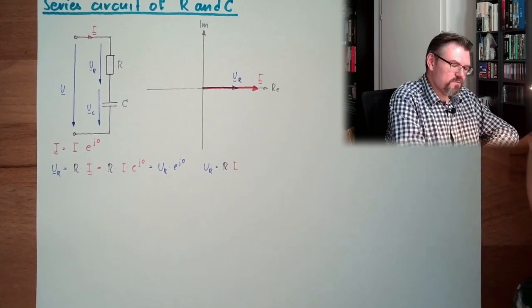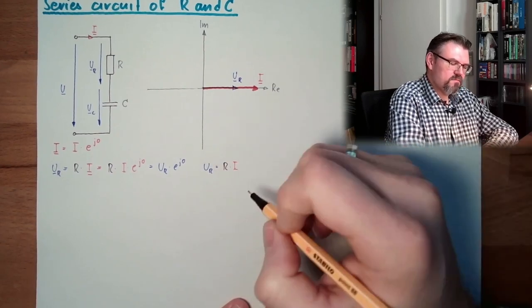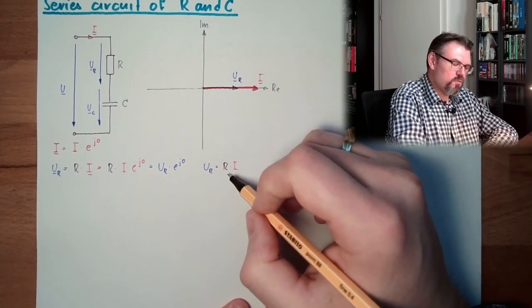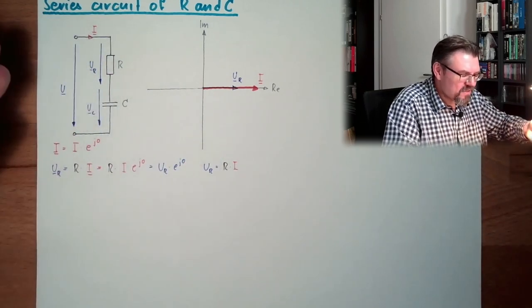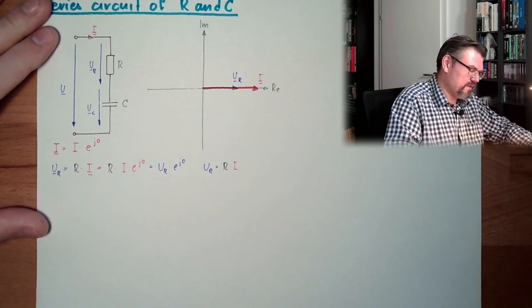Let's again have a look what the other vectors, the other pointers, I have now to adapt for this situation with this current. Let's have a look what this means for UR. It's R times I. So it's Ohm's law.